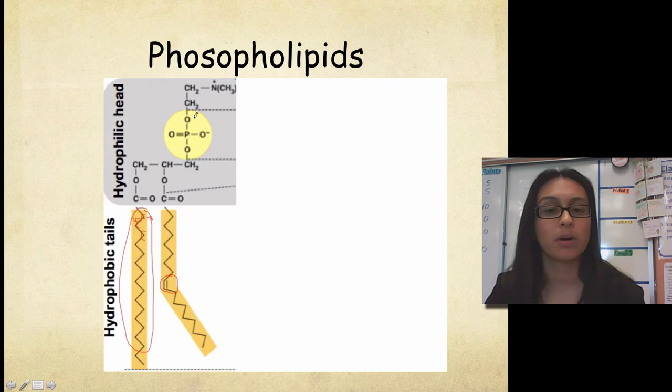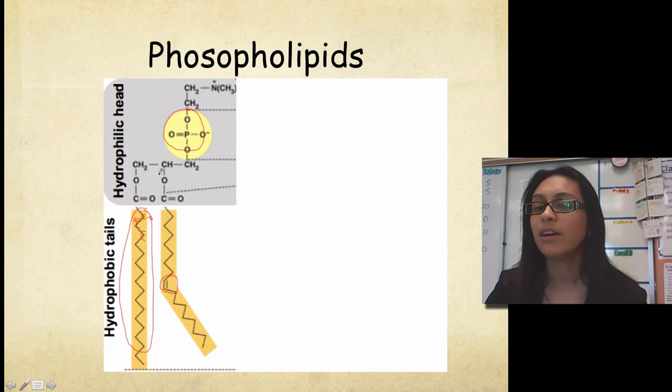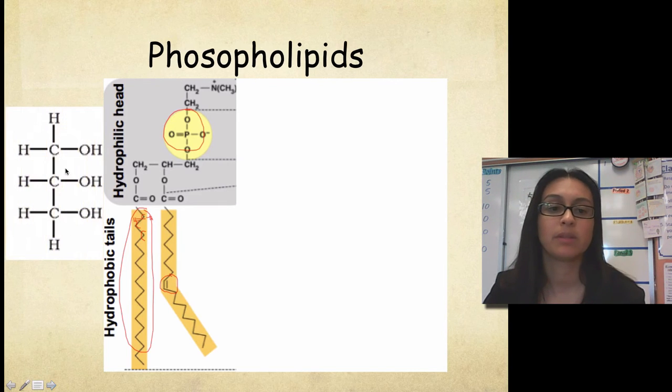Up here, you probably noticed this part here. We have a phosphate group. So you probably noticed that chemical group. This one here, you might not be able to identify very easily, but we've actually seen it before. It's actually glycerol.